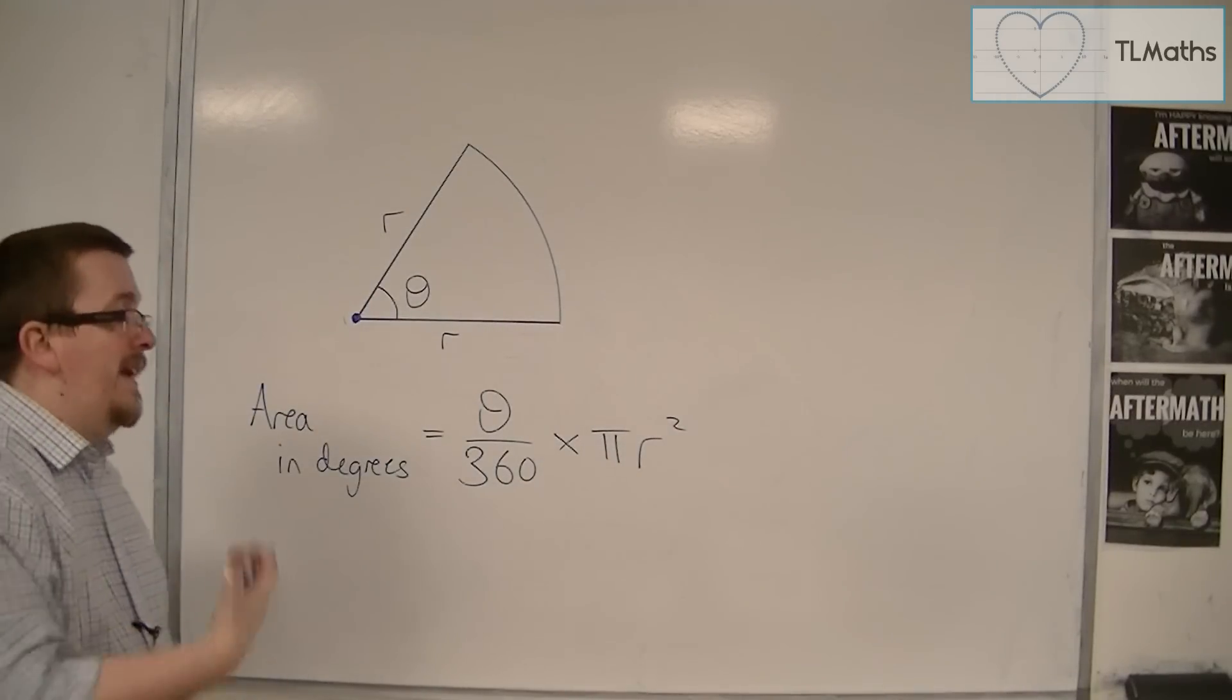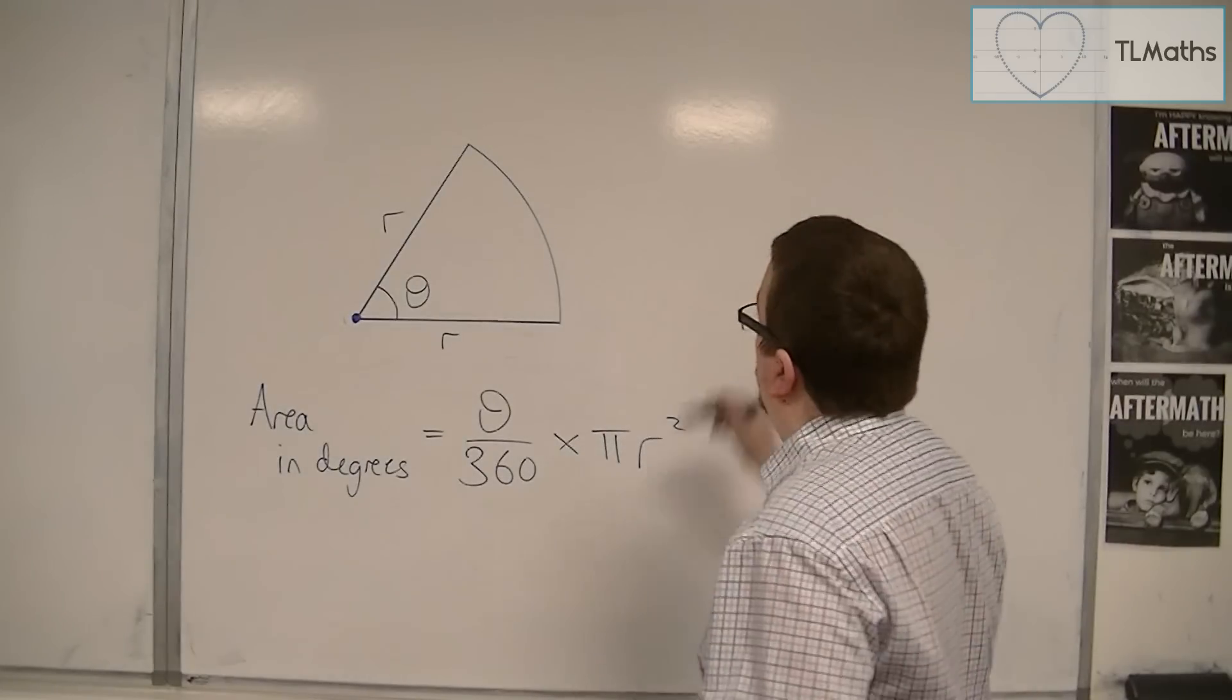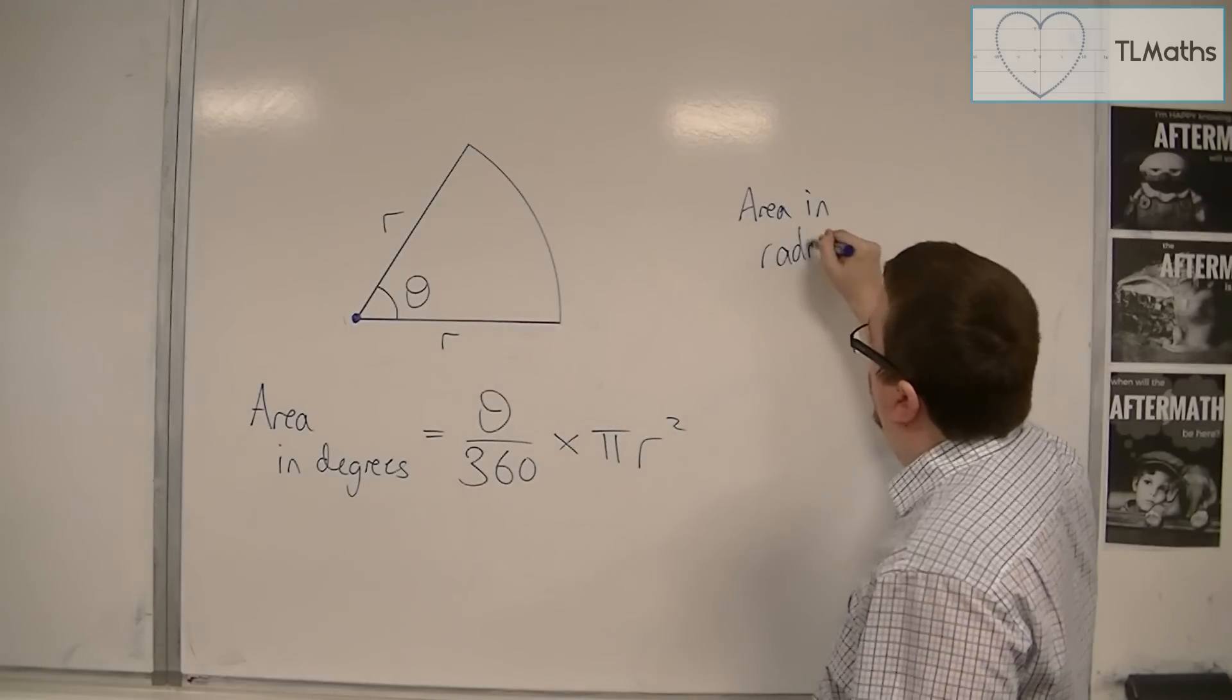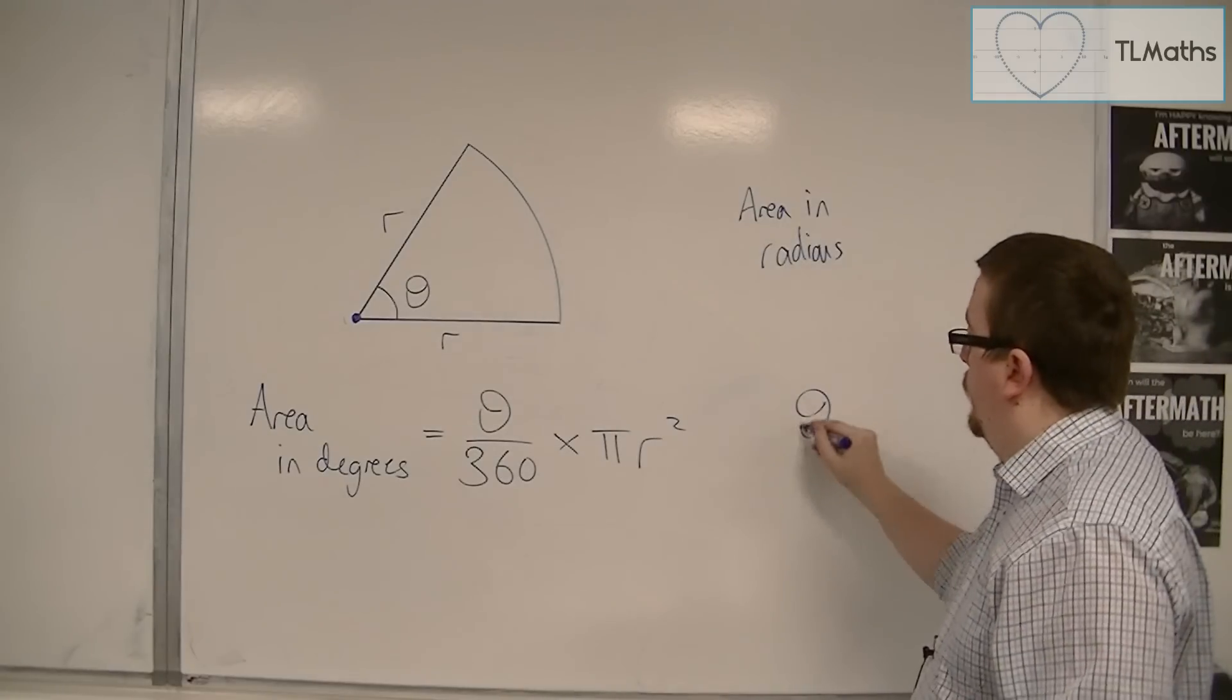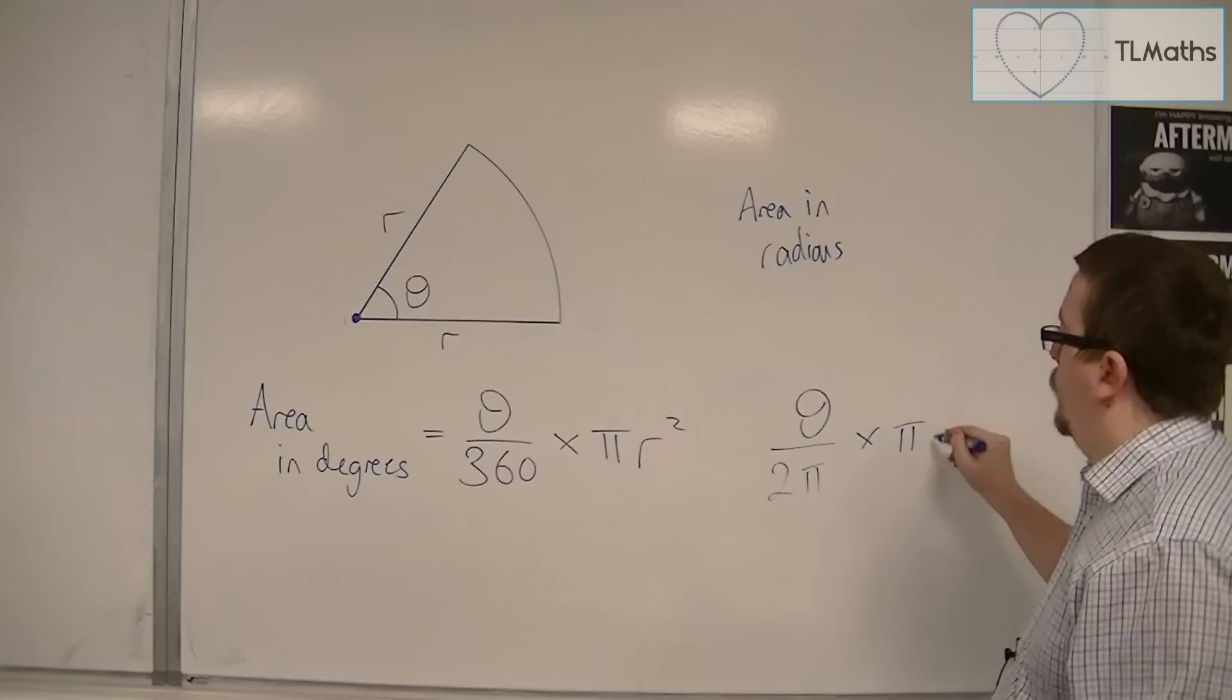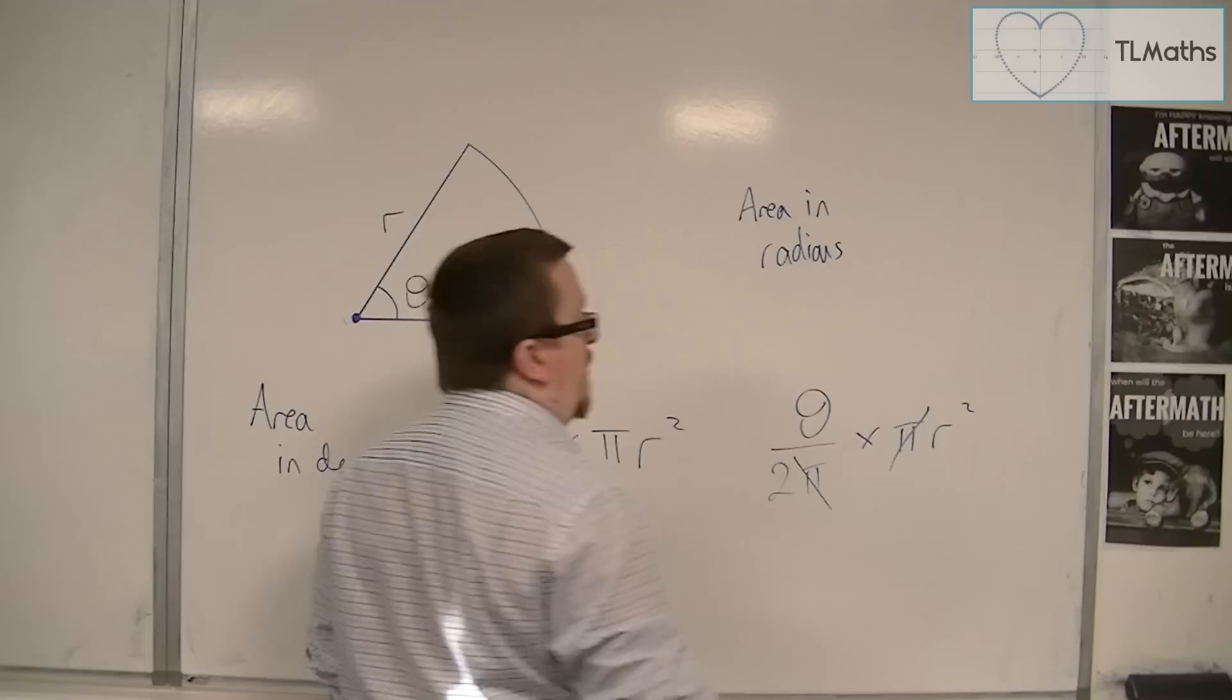That would be the formula in degrees. In radians, I can use the same technique as before, replace the 360 with 2 pi. So I now have theta over 2 pi times pi r squared. And we can see that we're dividing by pi and multiplying by pi, so they cancel each other out.